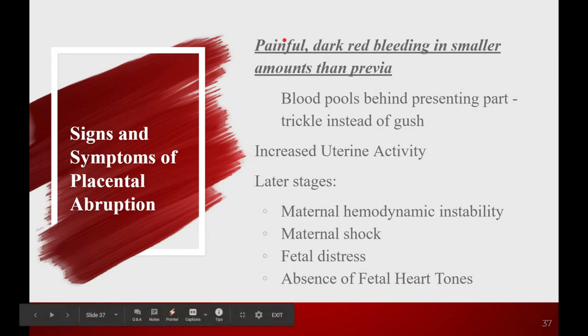Signs and symptoms of abruption: painful dark red bleeding in smaller amounts than a previa. The blood pools behind the presenting part — you get a trickle instead of a gush. We used to call it the positive shoe sign. You get that trickle of dark red blood; it's old blood because it has to move past the presenting part, the baby, and kind of trickles down her leg.